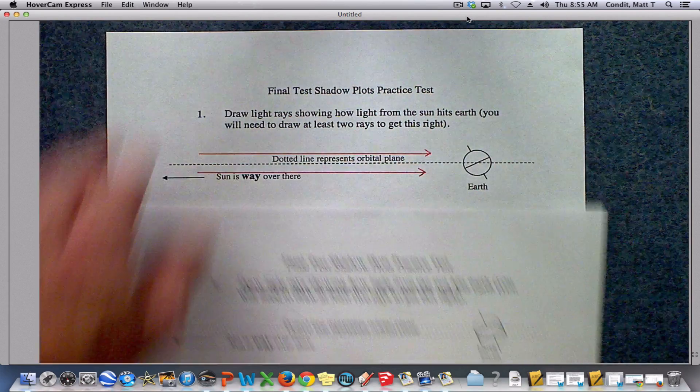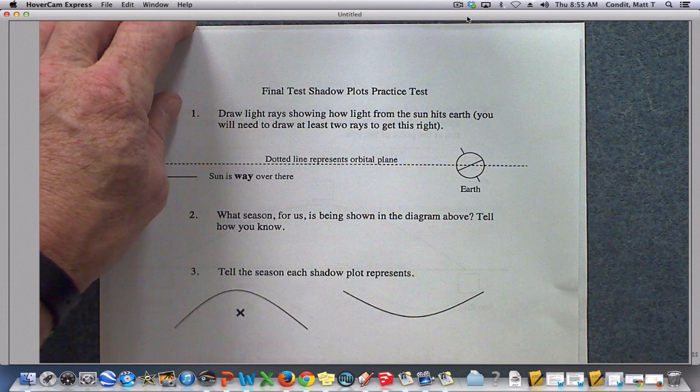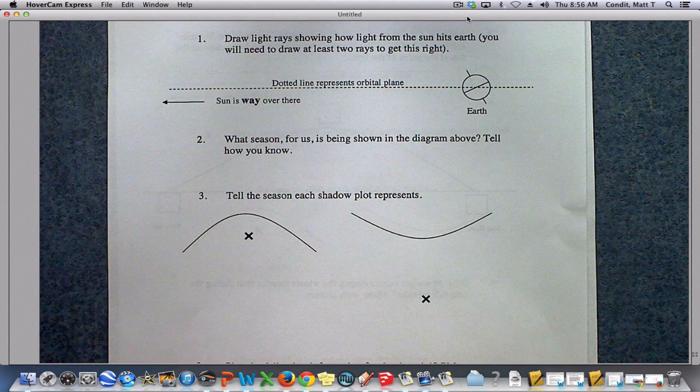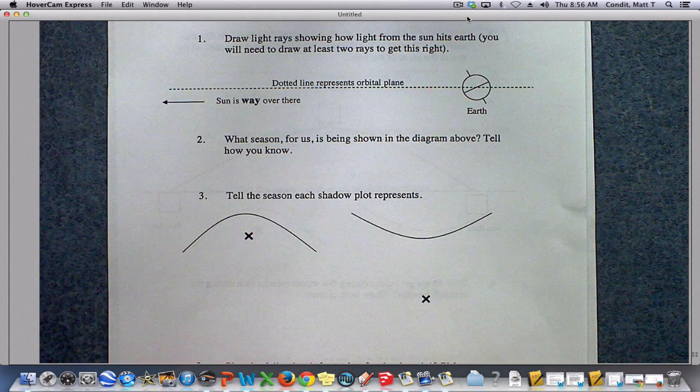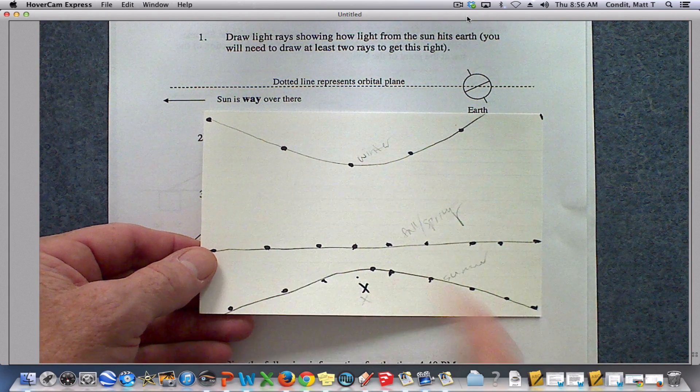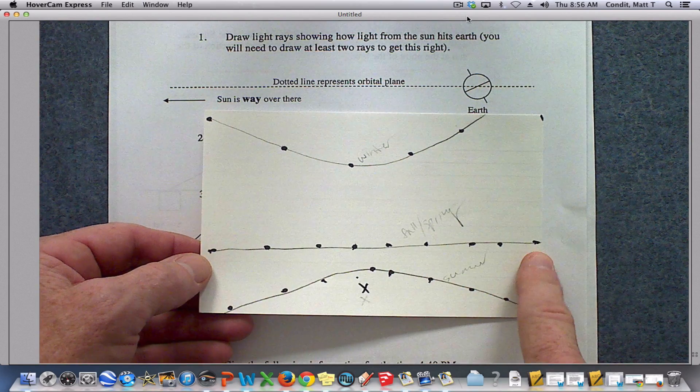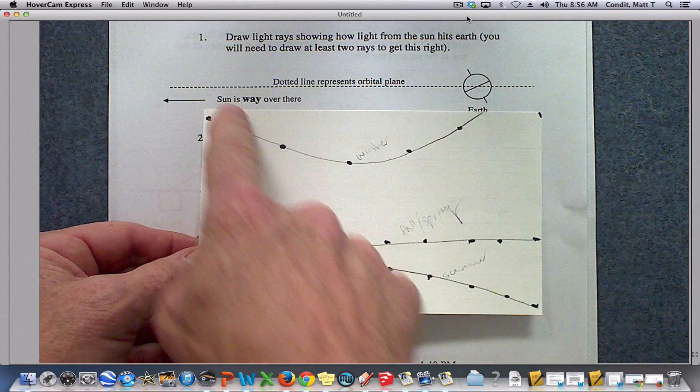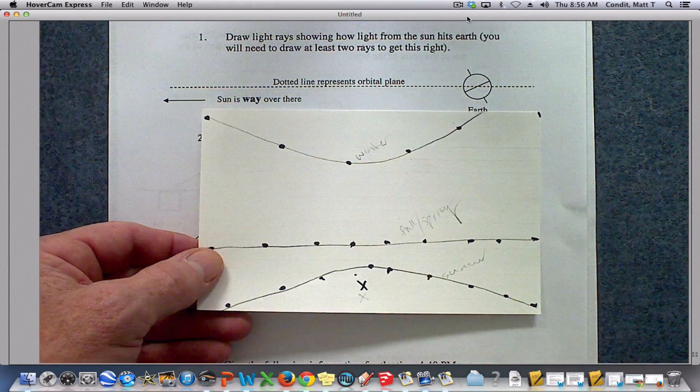The next question, tell which season each shadow plot is from? Well, this goes to our cards that we did in class that came out much like this. And we saw summer wrapping around the gnomon, spring fall a little further from the gnomon and going straight, and winter a long way away and curved away from the gnomon.